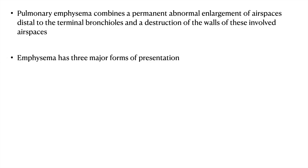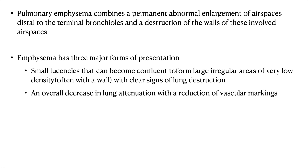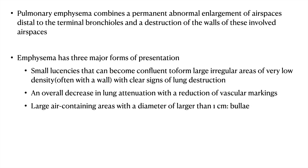Finally, pulmonary emphysema. Pulmonary emphysema combines permanent abnormal enlargement of air spaces distal to the terminal bronchiole and the destruction of the walls of these involved air spaces. Emphysema has three major forms of presentation: small lucencies that can become confluent to form a large irregular area of very low density with clear signs of lung destruction; an overall decrease in lung attenuation with reduction in vascular markings; and lastly, large air-containing spaces with a diameter larger than 1 cm, which are called bullae.